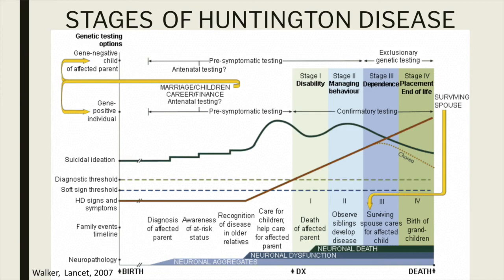There are two stages where suicidal ideation may be very high in Huntington disease. Huntington disease is known for higher suicidal rates, and the suicidal ideation is really high at the time when patients get tested on a pre-symptomatic basis and the test comes back positive. Because of that, genetic counseling is very important in the process of pre-symptomatic testing. Once they have bypassed that stage and have been adequately counseled, the second rise in suicidal tendencies is at the time when the patient is losing their independence and starting to become dependent on the family for their activities of daily living.